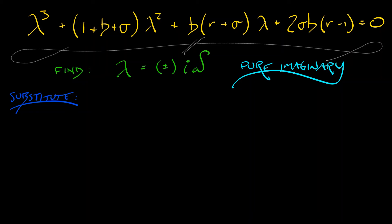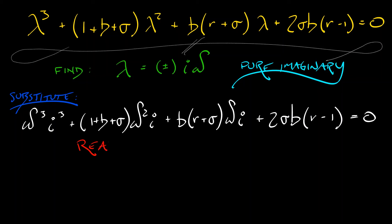What happens when we substitute in lambda equals i times omega? We get, in the cubic term, omega cubed times i cubed. In the quadratic term, quantity one plus b plus sigma times omega squared times i squared. In the linear term, b times quantity r plus sigma times omega times i. And in the constant term, two sigma b times r minus one. Set that equal to zero, we can take those powers of i and separate out into the real and imaginary parts.